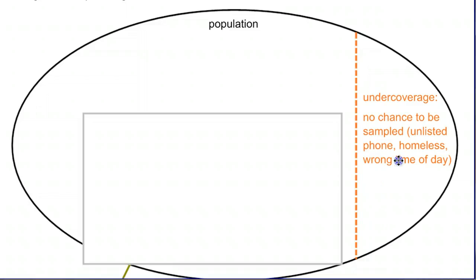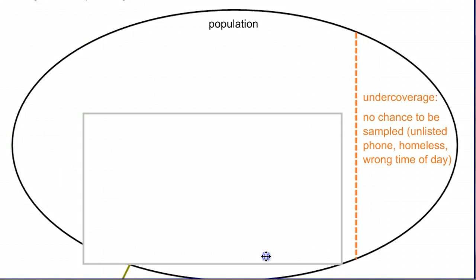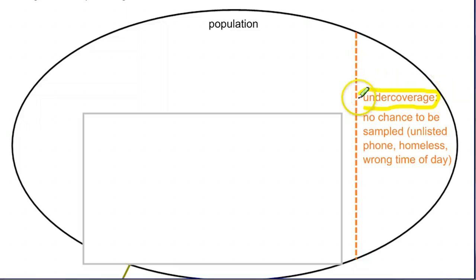So if you were doing a phone survey, it might be people that have an unlisted phone number — you can't get them. Or if you were going door to door, it might be people who are homeless and don't have a house to knock on. Or if you're having people come by a store, it might be the wrong time of day. Thinking about a school example, maybe kids are sick that day. So even if you wanted to ask the entire school and do a complete census — ask everyone — there are going to be some people you just can't get. We call that undercoverage.